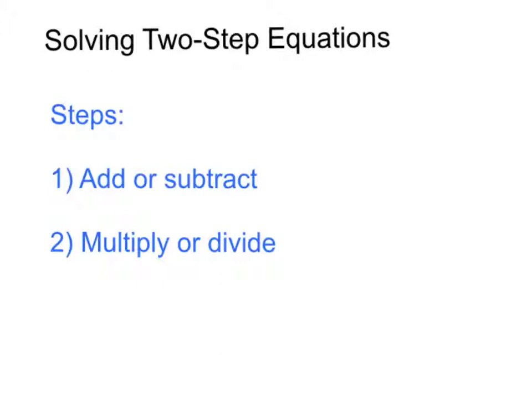So the steps are, first of all, we're going to do any addition or subtraction that we need to do, and then the second step will be to multiply or divide. For the second step, for multiplying and dividing, we're going to be down to basically a one-step equation.